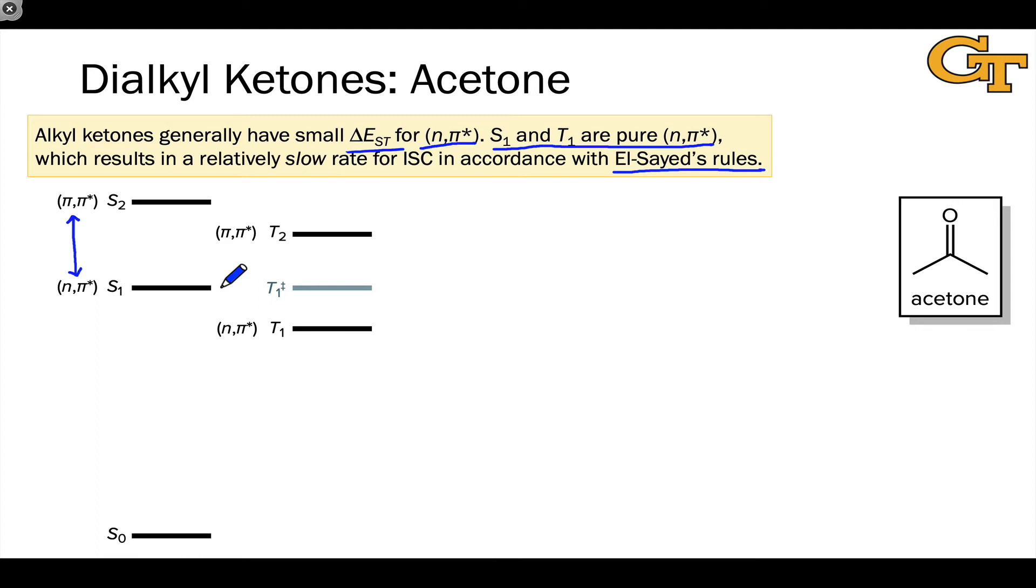And it's going to have to happen through a non-radiative process where S1 essentially becomes a vibrationally hot state of the T1 level before undergoing vibrational relaxation back down to T1. This is relatively slow for dialkyl ketones because there's no change in orbital configuration in going from S1 to T1. They're both n,π*.